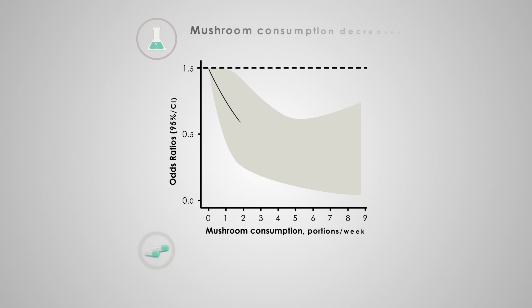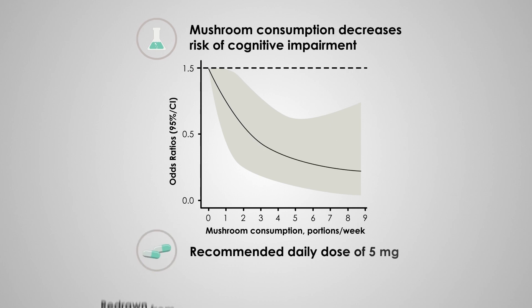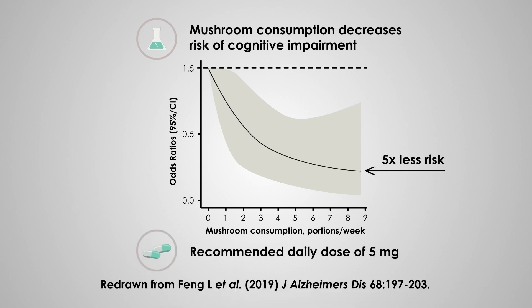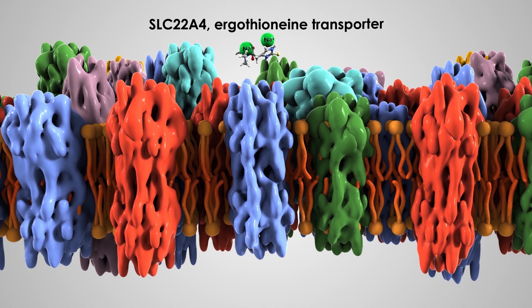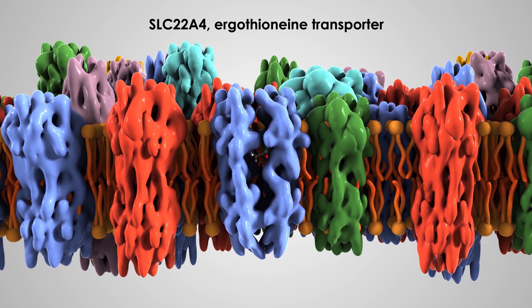One study showed 1.5 mushroom servings a week halved the chance of mild cognitive impairment. Nine servings decreased it fivefold. But no transporter means no uptake — it's as simple as that.